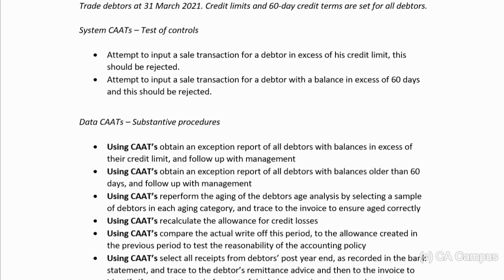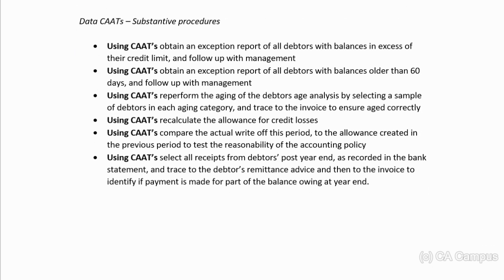Looking at the solution, there are two tests of controls using test data, and then exception reports. Follow up on any issues with those. Test the aging, select a sample of debtors from each aging category and trace it to the invoice. Recalculate and compare the actual write-off in the prior year to the allowance in the current year to see if it's reasonable — using CATS because the information is in the system.